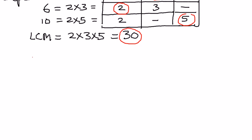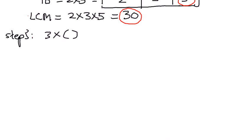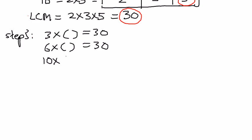Now we are ready for step number 3. We ask: 3 times what number equals 30? 6 times what number equals 30? And 10 times what number equals 30? We find that 3 times 10 equals 30, 6 times 5 equals 30, and 10 times 3 equals 30.